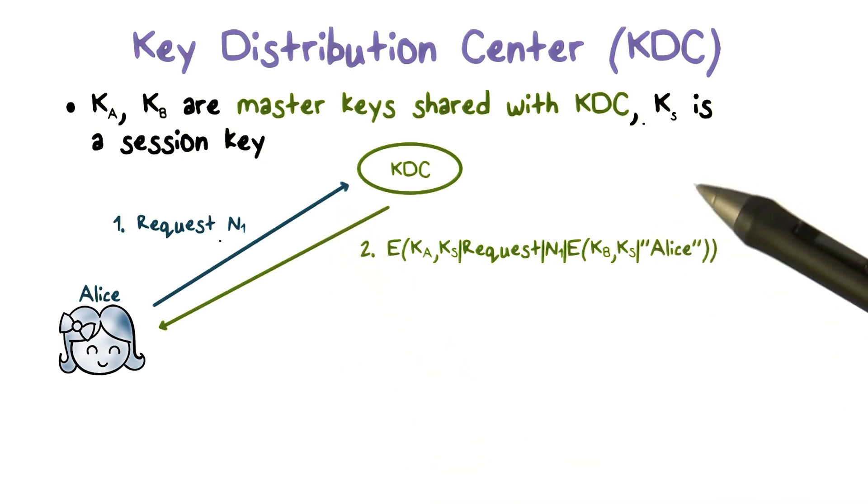A nonce is a random value. Then, the KDC sends a message back to Alice that is encrypted using the master key KA that is shared between Alice and KDC.